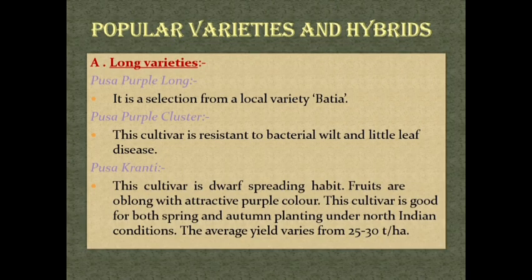Popular varieties and hybrids. Long varieties: Pusa Purple Long — it is a selection from a local variety Batia. Pusa Purple Cluster — this cultivar is resistant to bacterial wilt and little leaf disease. Pusa Kranti — this cultivar has a dwarf spreading habit; fruits are oblong with attractive purple color. It is good for both spring and autumn planting under North Indian conditions. The average yield varies from 25 to 30 tonnes per hectare.